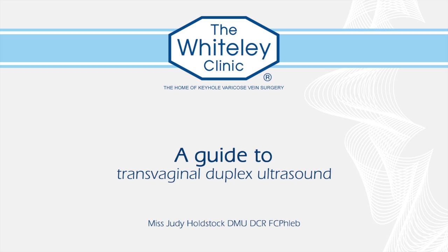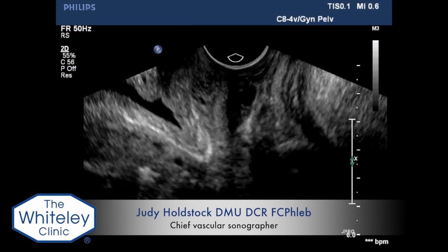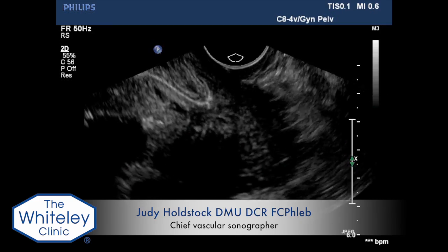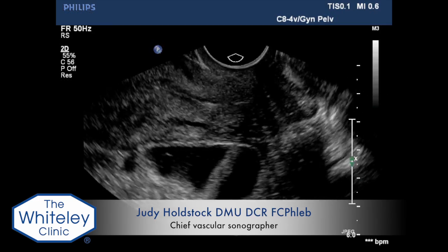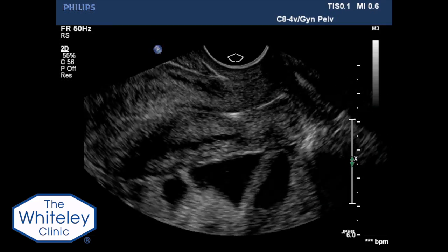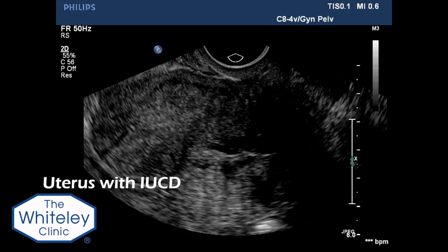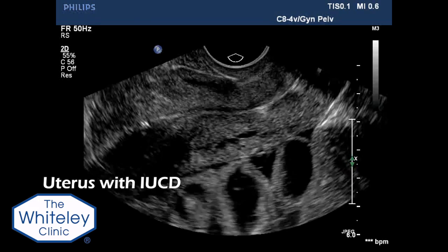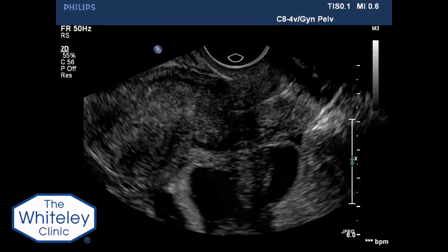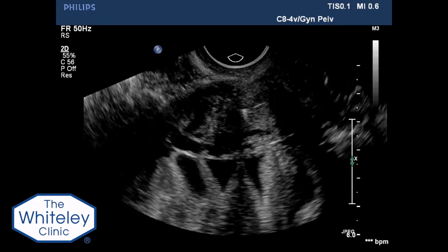Transvaginal duplex sonography is performed with the patient lying on an examination couch with head and torso elevated to 45 degrees. The transducer enters the vagina in longitudinal plane to demonstrate the uterus, seen here with an IUCD in situ.